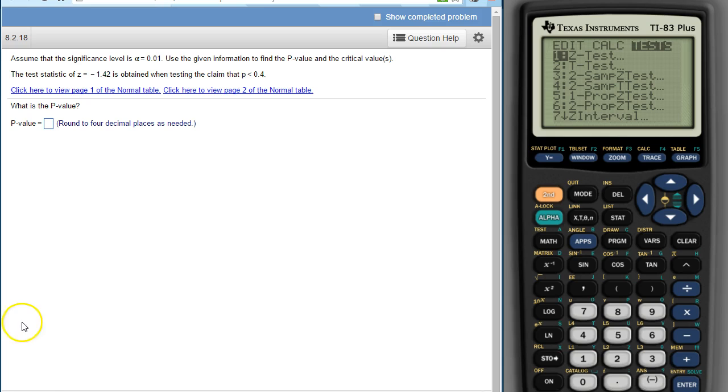Hi Shep's class, this is another question from your 8.2 homework set. Here we're looking for a p-value from a z-test statistic for a proportion. That's our level of significance. We want to find the p-value and any critical values. The test statistic is this, and the claim is p is less than 0.04.